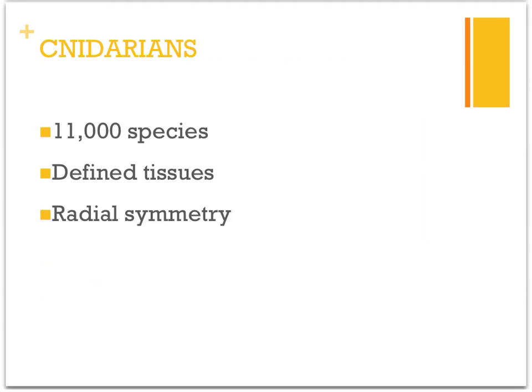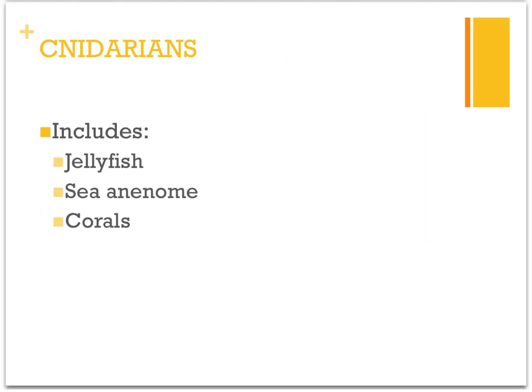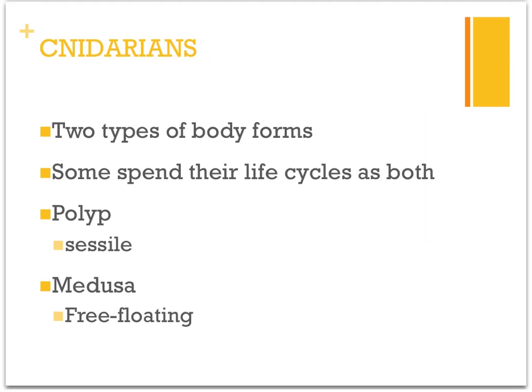The next group is your cnidarians — the C is silent. There are about 11,000 species of cnidarians. They have defined tissues and are radially symmetrical. Examples that will be familiar include jellyfish, sea anemones, and corals. Cnidarians have two types of body forms: the polyp and the medusa. Polyps are sessile — stationary, stuck in one place. Medusas are free-floating body forms.